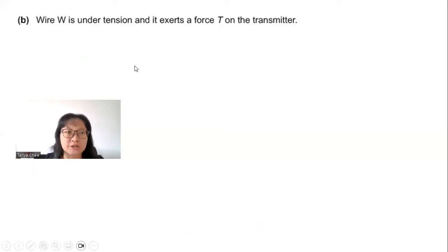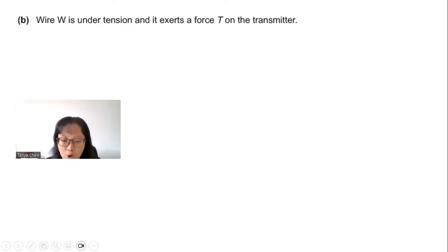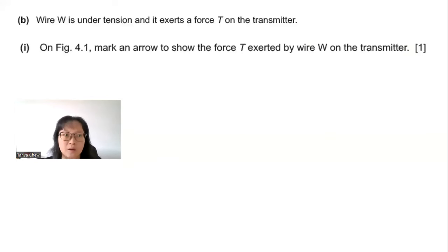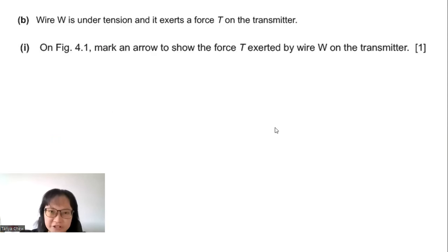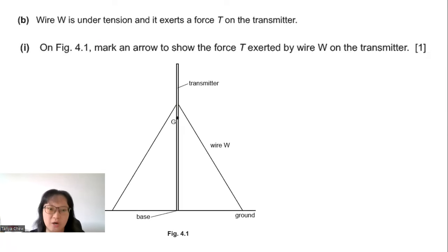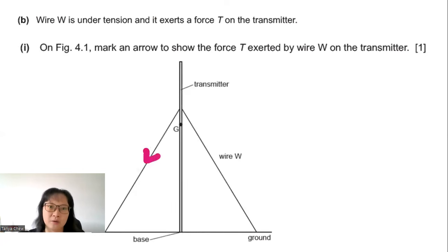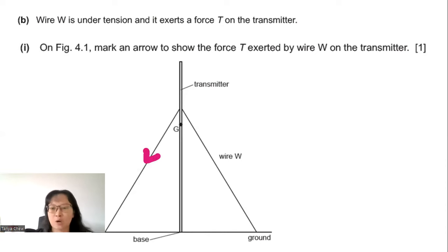Part B: Wire W is under tension and exerts a force T on the transmitter. First part: On figure 4.1, mark an arrow to show the force T exerted by wire W on the transmitter. I mark it with a single arrow pointing downwards along the direction of the wire.